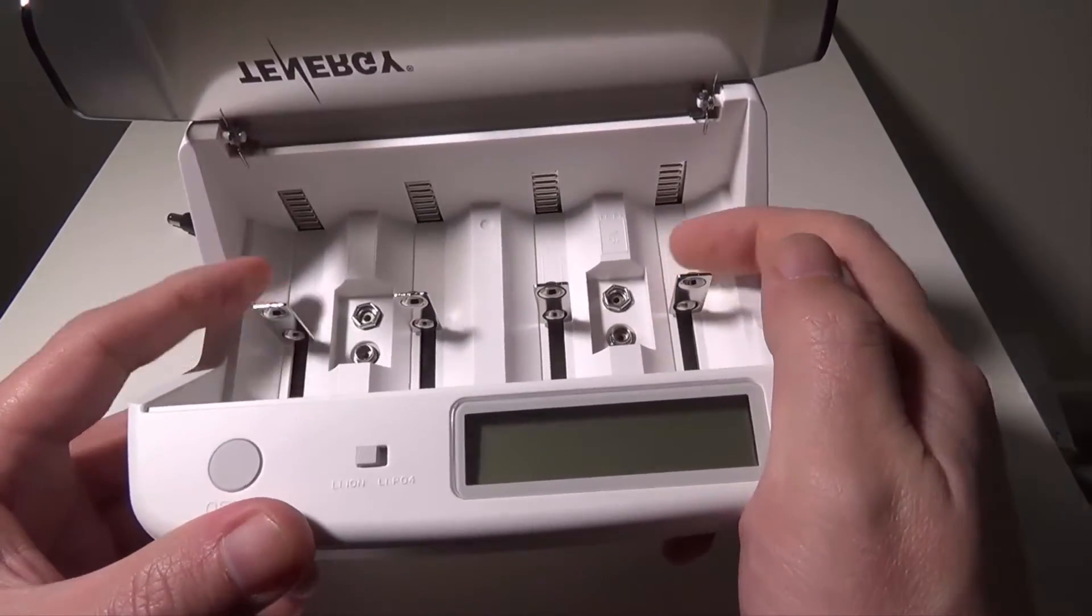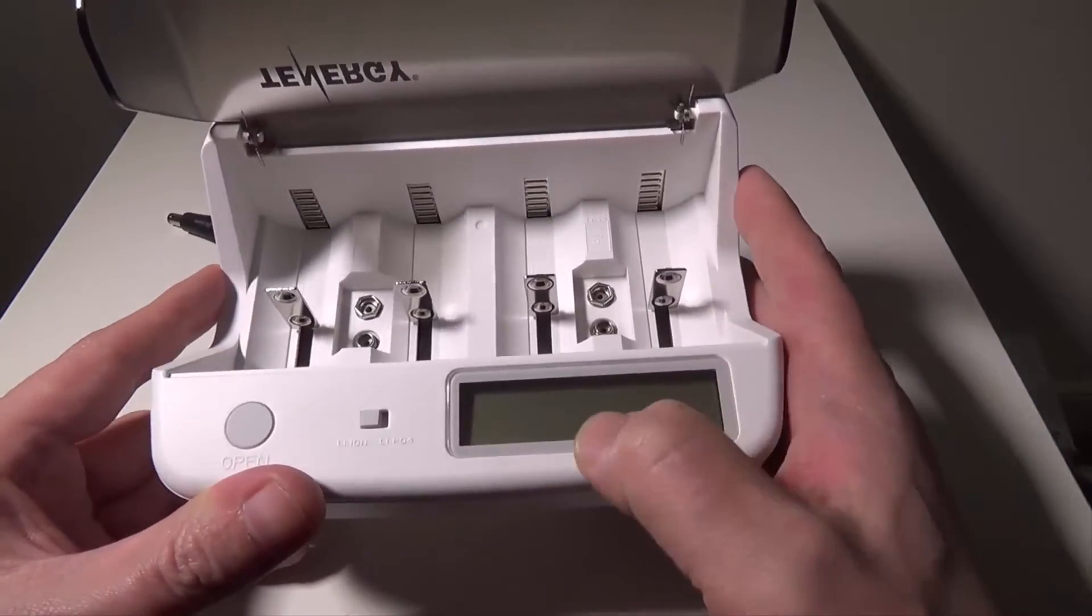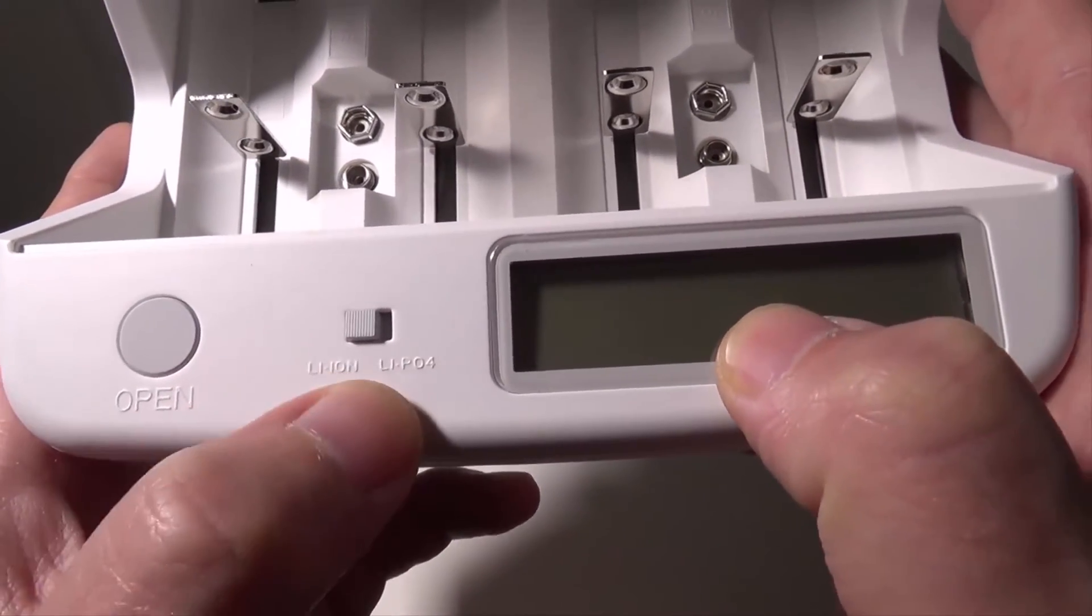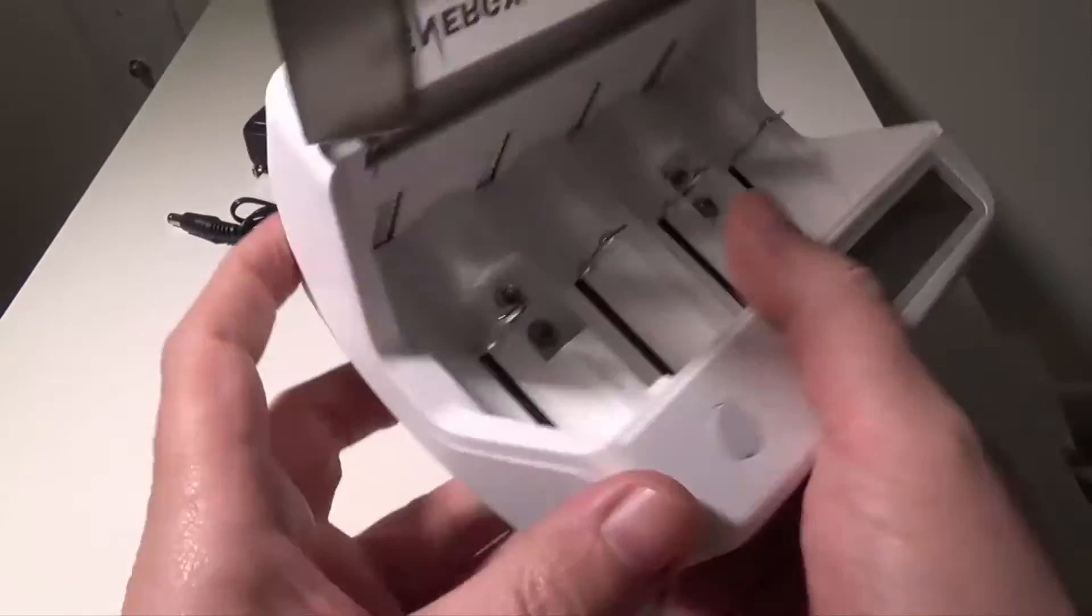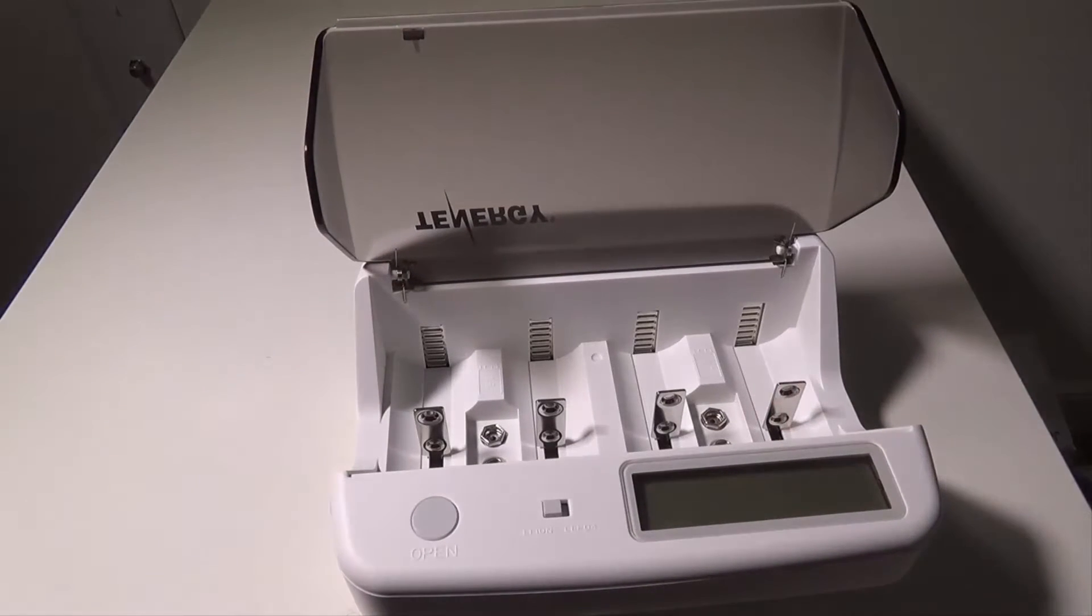On the front again, you will have that LCD screen, and then you have a switch here. To the left is going to be lithium-ion, to the right is going to be LiFePO4, so you've got that. And the back has the plug-in for the DC. So let's plug this in real quick and we will charge up a couple batteries just to kind of show you what the operation looks like.